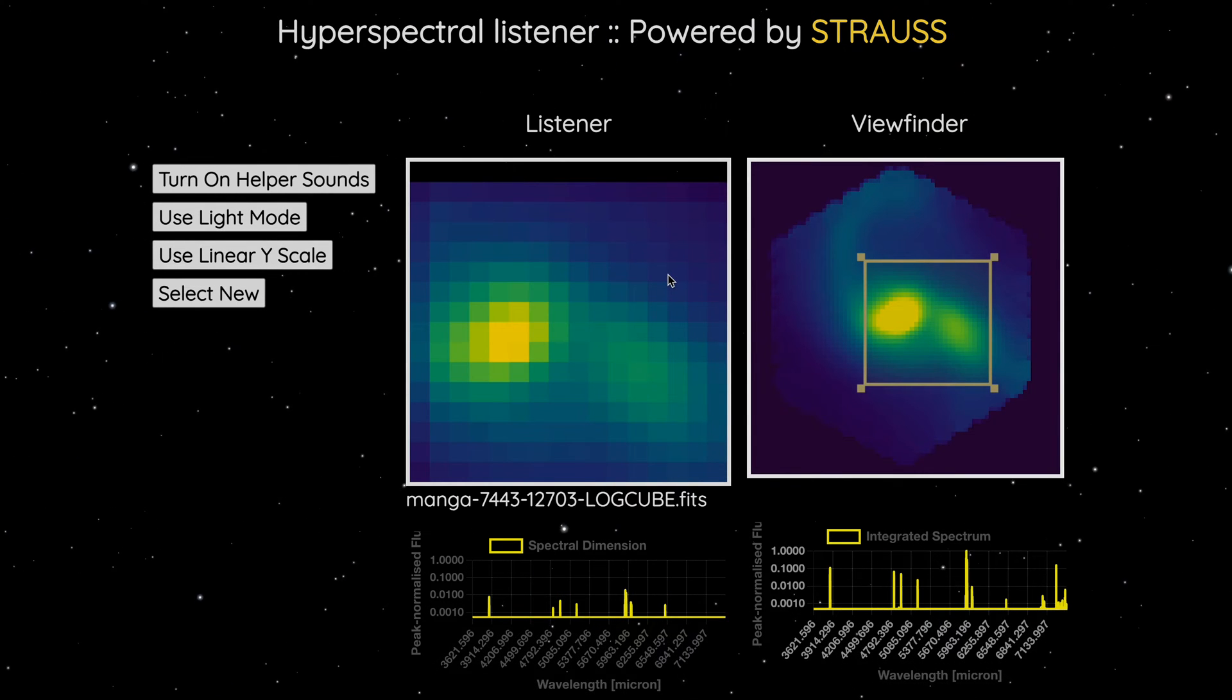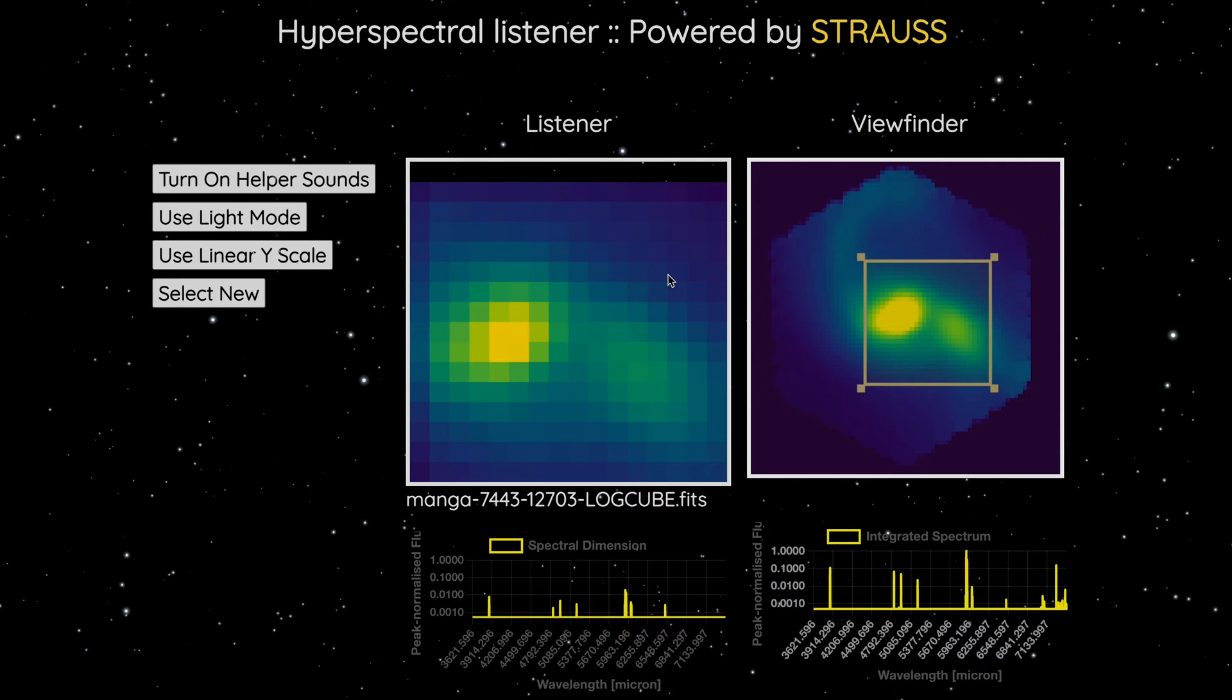If we listen to a broader range in frequency, the different tones tell us about light emitted by different chemical elements.